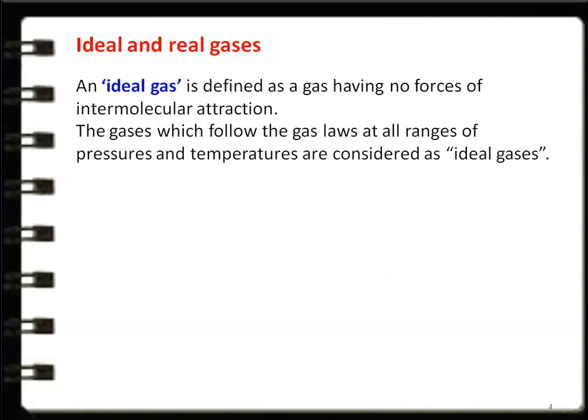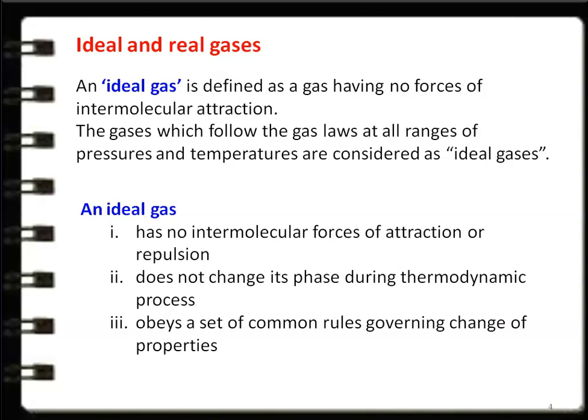An ideal gas is defined as a gas having no forces of intermolecular attraction. Gases which follow the gas laws at all ranges of pressure and temperature are considered ideal gases. The perfect gas equation PV = MRT or PV = RT applies to any gas obeying it at all pressures and temperatures. The main characteristic of an ideal gas is no force of intermolecular attraction or repulsion. An ideal gas does not change its phase during a thermodynamic process and obeys a set of common rules governing the change of properties.